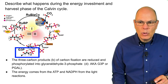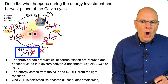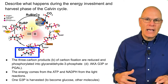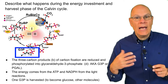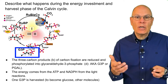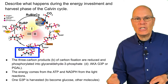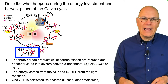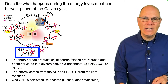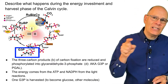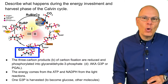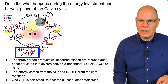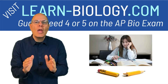This G3P molecule can now be harvested, taken out of the Calvin cycle, and used to build plants. This is the origin of the biomass in almost any ecosystem — it's ultimately the origin of your biomass too.